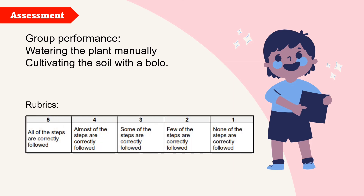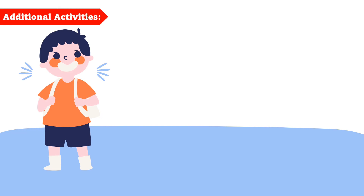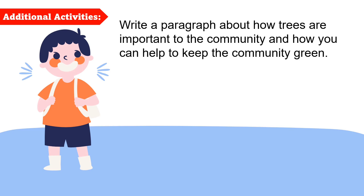Finally, here are your additional activities — your homework or assignments. Write a paragraph about how trees are important to the community and how you can help keep the community green. Remember, a paragraph consists of at least three sentences. Here is how your teacher will rate you.